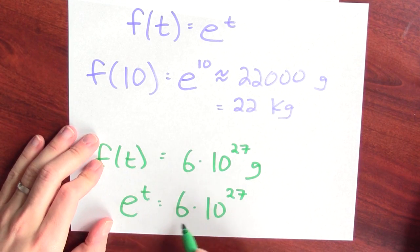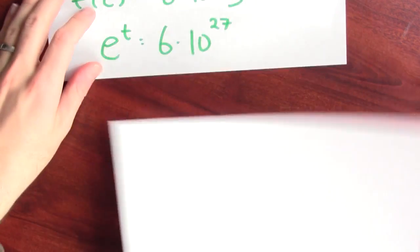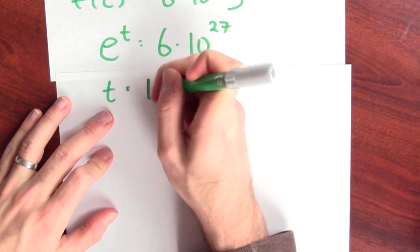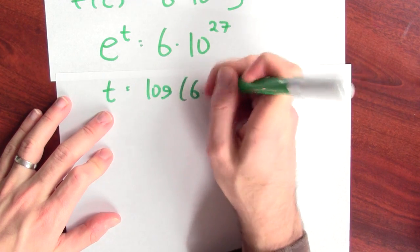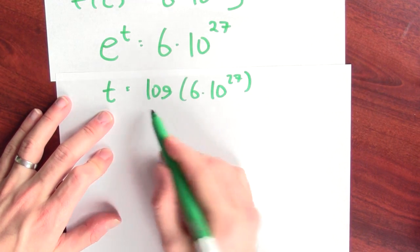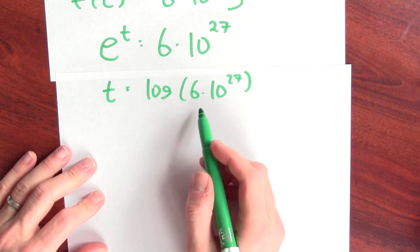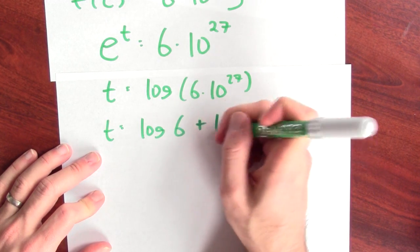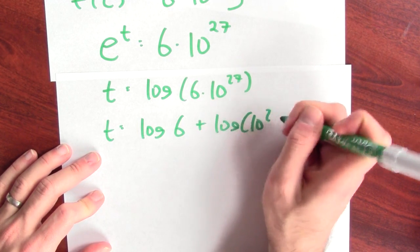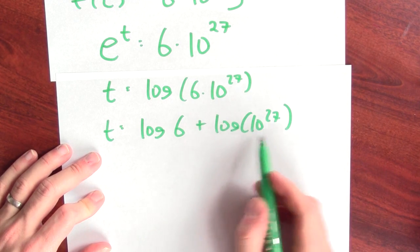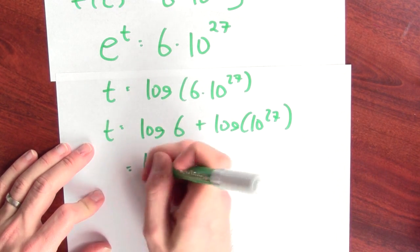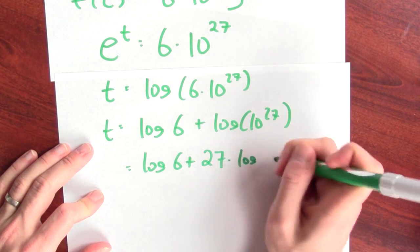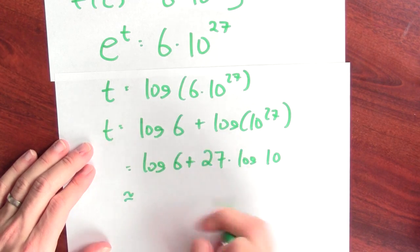I'm looking for t so that e to the t is 6 times 10 to the 27th. I can take log of both sides. I'm looking for t equals log of 6 times 10 to the 27th. This is natural log. And this is log of a product, which is the sum of the log, so it's log of 6 plus log of 10 to the 27th. This is log of something to a power, so that's log of 6 plus 27 times log of 10.